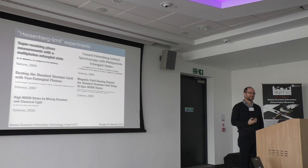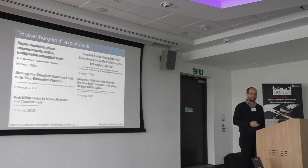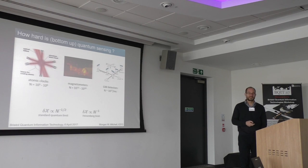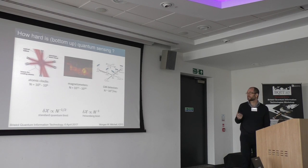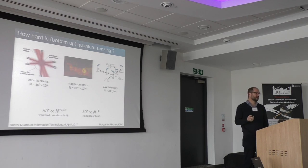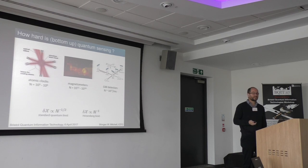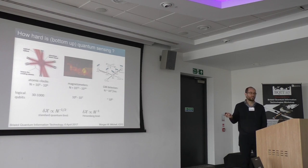But now as we enter the quantum technology era, it's not enough to do the best that you can possibly do — you have to actually do well. What we're competing against are technologies: atomic clocks, magnetometers, gravitational wave detectors, that do the naive strategy but with a large number of qubits. A modern atomic clock has a thousand to a million atoms in it. Magnetometers might have ten to the twelve. Gravitational wave detectors use about ten to the seventeen photons per millisecond. So in the bottom-up strategy, competing with that requires thirty to a thousand logical qubits for the easiest applications, and becomes extremely hard for gravitational wave detectors.